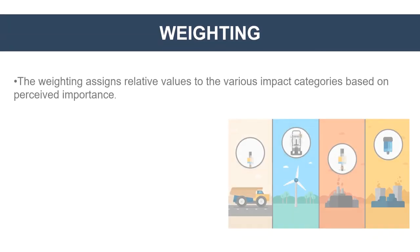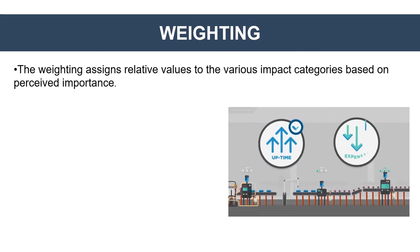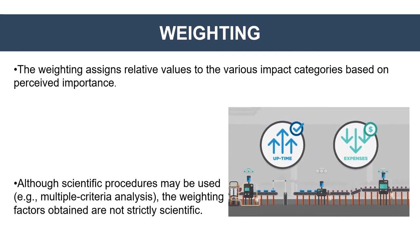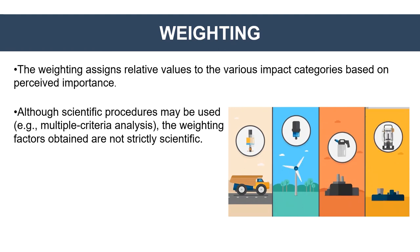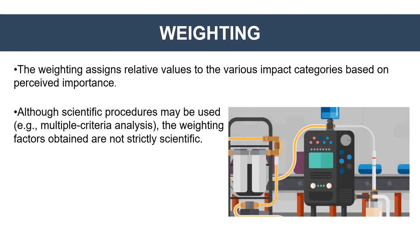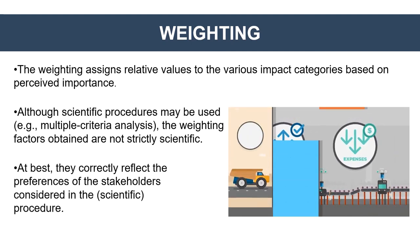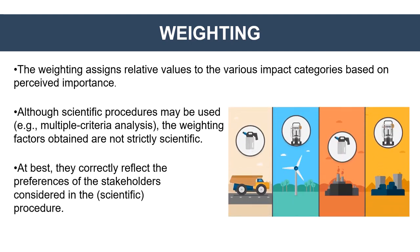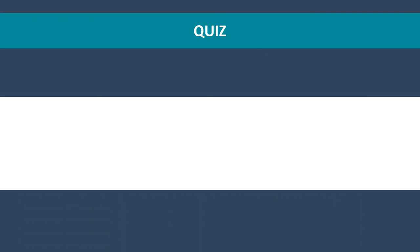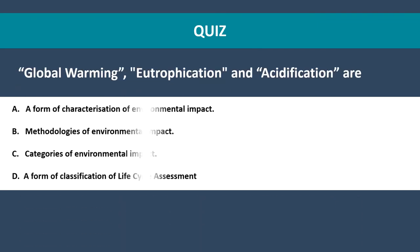Weighting: weighting assigns relative values to the various impact categories based on perceived importance. Although scientific procedures such as multiple criteria analysis may be used, the weighting factors obtained are not strictly scientific — at best they correctly reflect the preferences of the stakeholders considered in the scientific procedure.